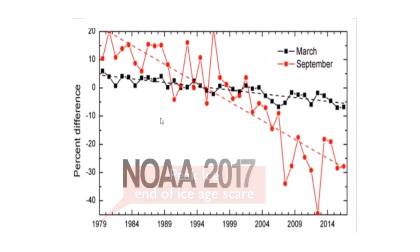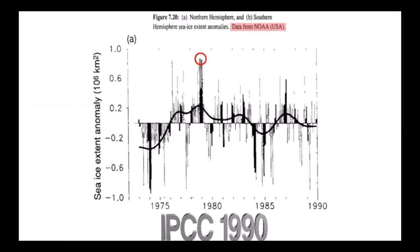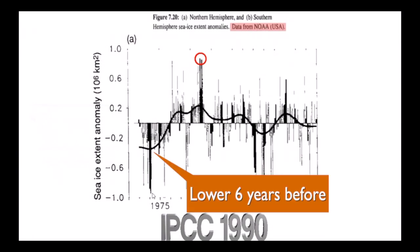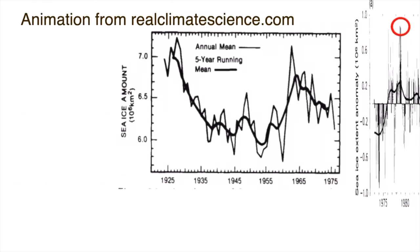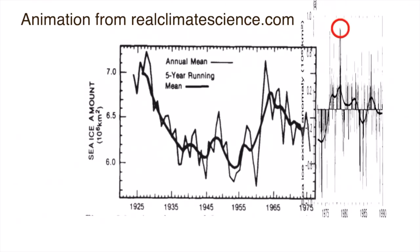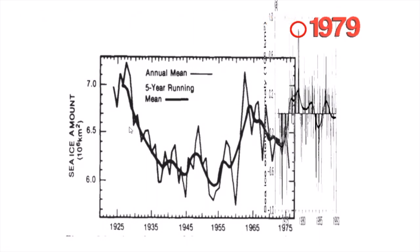So let's take that graph and attach it to another graph that shows the history prior to 1979. This graph — from official IPCC sources in 1990 — shows that the actual sea ice extent was far lower just a few years before 1979, in 1975, and it is claimed these are measured by the same system, by satellite. So they hid the 1975 low sea ice extent.